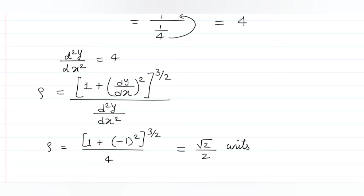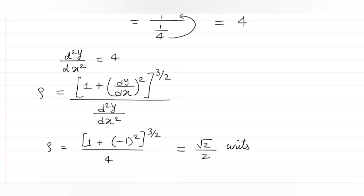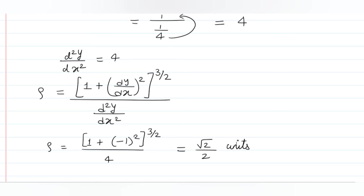We followed the same steps as in the last lecture. The concept is the same — only the derivative method changed slightly because the function was different. If the function is easy, the derivative is quick; for different functions, we apply the appropriate differentiation methods learned previously.